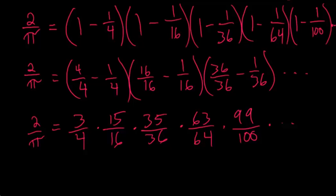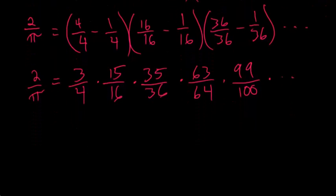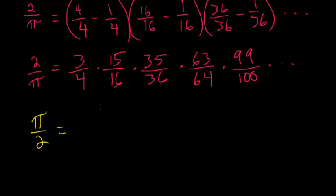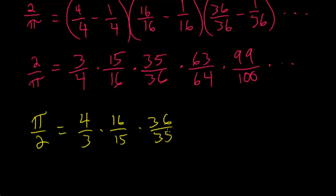Taking the reciprocal of both sides, since this is a product we simply flip all the fractions: π/2 = (4/3) · (16/15) · (36/35) · …